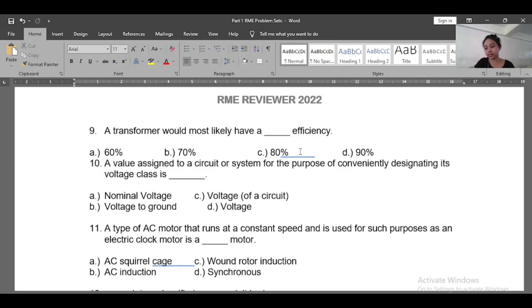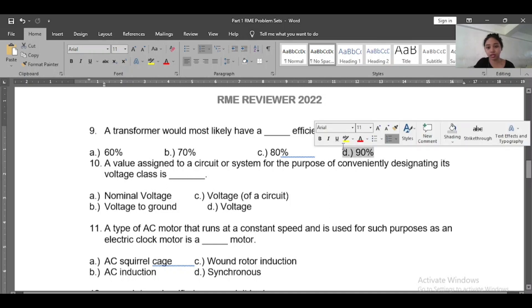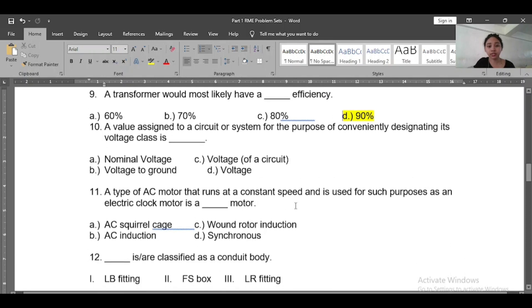Number ten: A value assigned to a circuit or system for the purpose of conveniently designating its voltage class is blank. A) Nominal voltage, B) Voltage to ground, C) Voltage of a circuit, D) Voltage. So what's the answer? The answer will be A, nominal voltage.